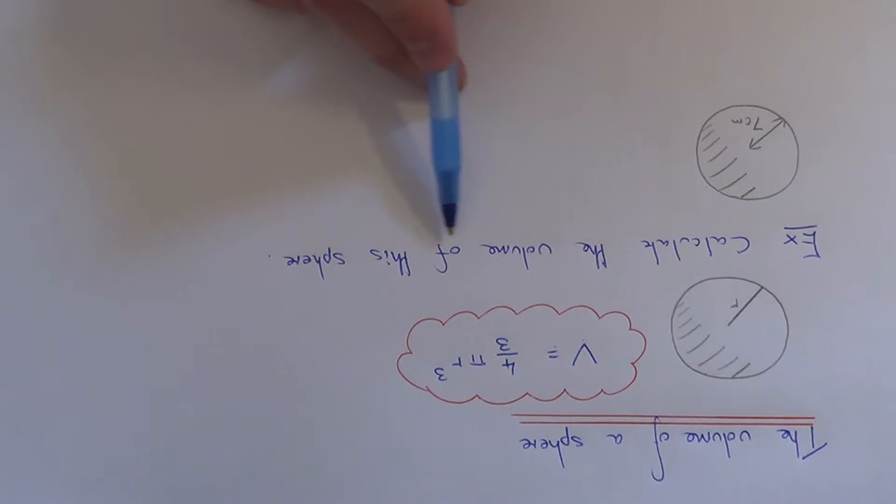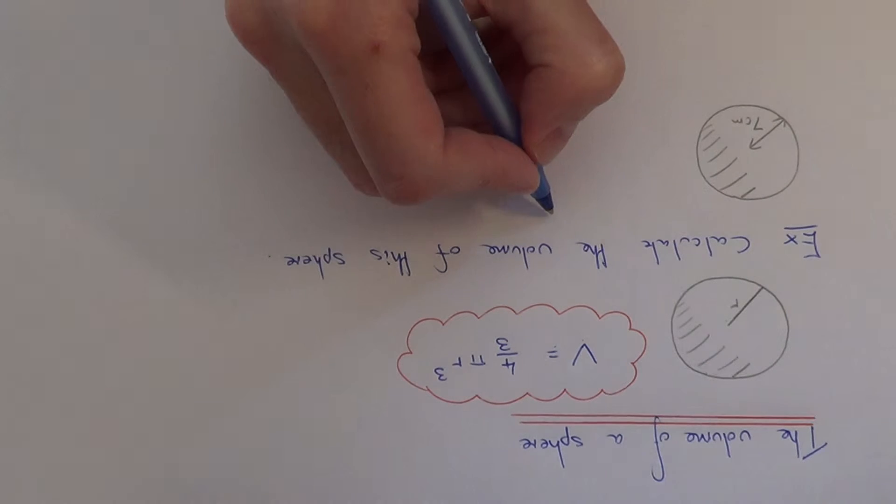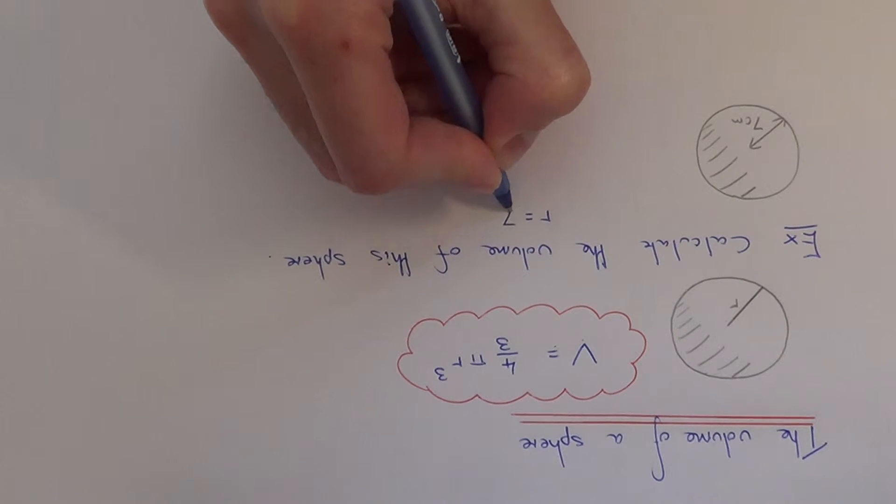Let's have a look at the example here. We've got to calculate the volume of the sphere shown below. Here we have a radius of 7 centimetres, so r equals 7.